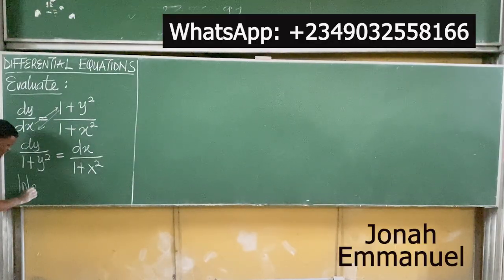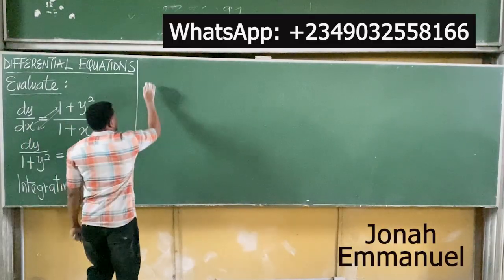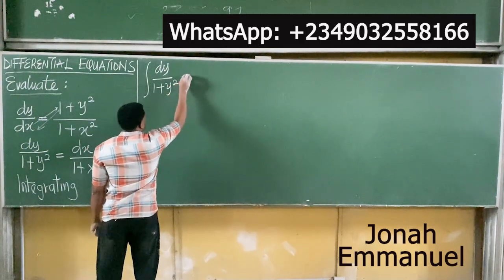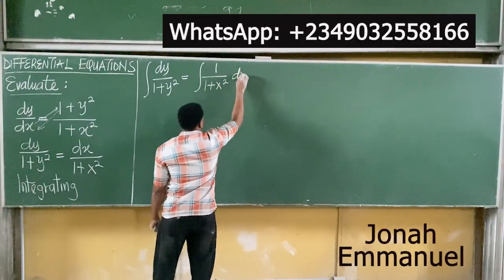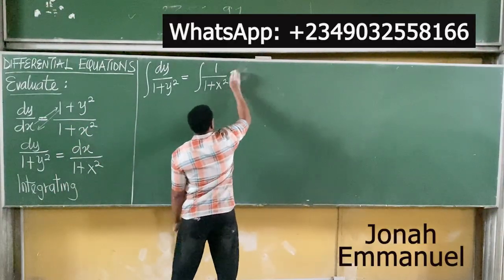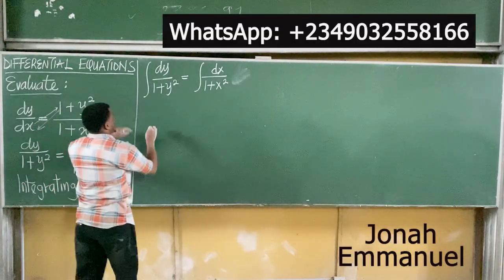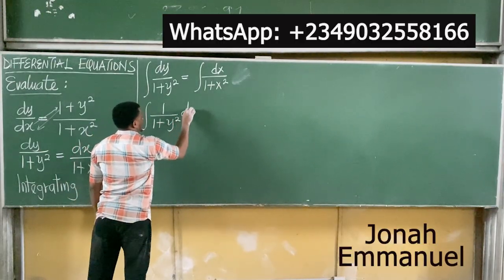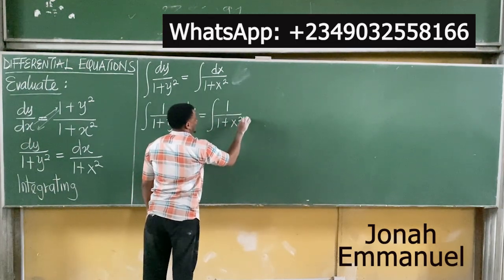Next up, integrating both sides. I have the integral of y all over 1 plus y squared is equal to the integral of x all over 1 plus x squared dx. Separating them, I have integral of 1 all over 1 plus y squared dy is equal to the integral of 1 all over 1 plus x squared dx.